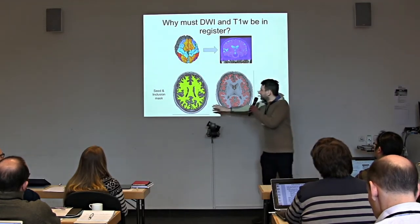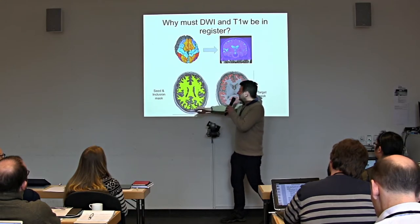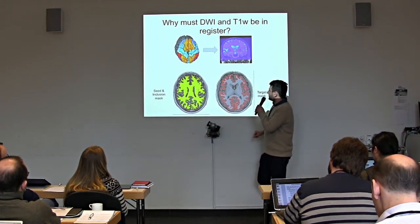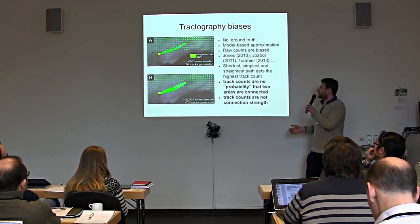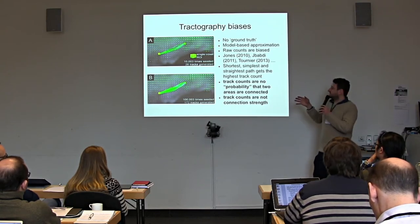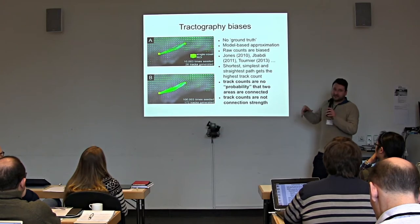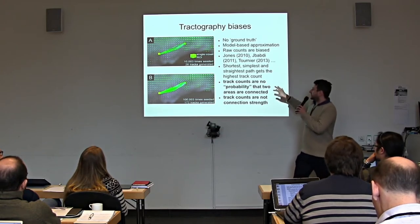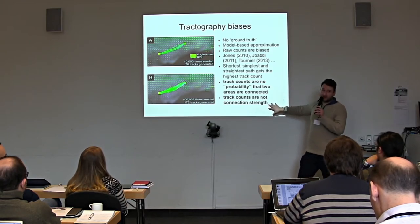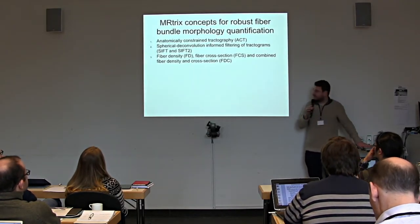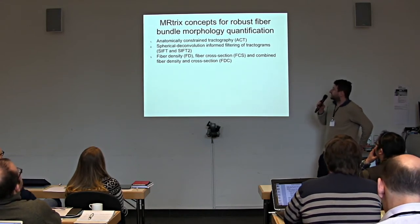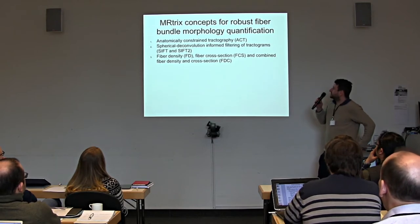We need registration between T1 and diffusion image to derive masks: a white matter mask where tractography is performed, and the gray matter–white matter surface where tracts terminate and where we use our region parcellation to aggregate them into brain network model description. You cannot use the raw tractography count as a metric for connection strength — it is highly biased: shorter, simpler, and straighter pathways have higher tractography counts. These tract counts are neither a probability that two areas are connected nor connection strengths. Additional processing steps called SIFT and SIFT2 in MRtrix filter these estimates. We also use anatomically constrained tractography to discard implausible tracts.